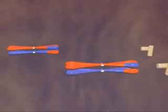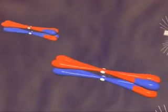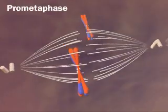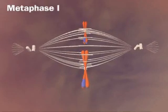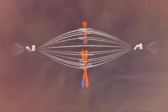Prometaphase begins as the nuclear envelope disappears, and the spindle invades the nuclear space. Pairs of homologous chromosomes move together to the equatorial plate for metaphase I.